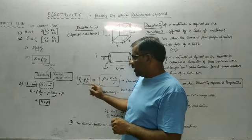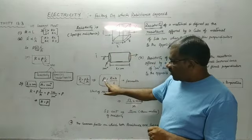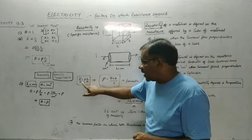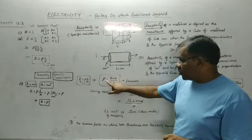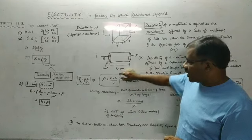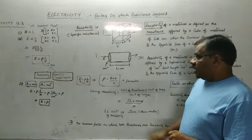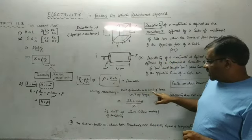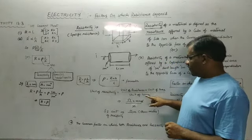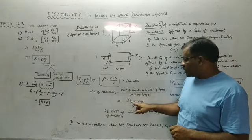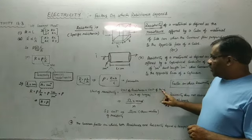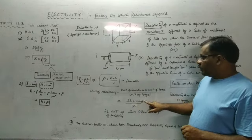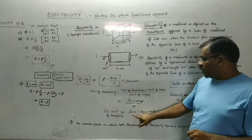From the formula R = ρL/A, if we want to calculate resistivity, rearranging gives ρ = RA/L. To find the SI unit of resistivity: SI unit = (unit of resistance × unit of area) / unit of length = (ohm × meter²) / meter = ohm·meter. So the SI unit of resistivity is ohm·meter.